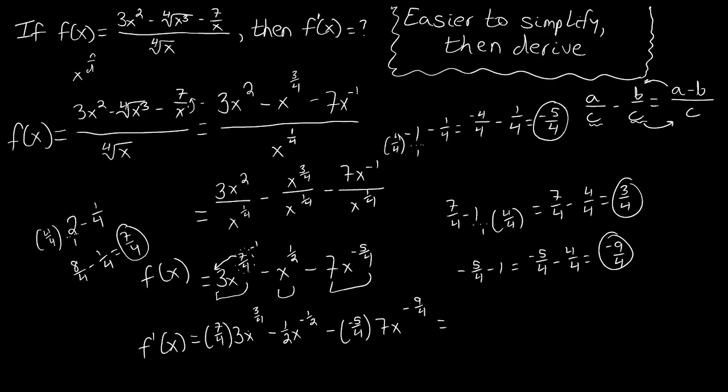Seven-fourths times three is twenty-one-fourths x to the three-fourths. The middle term stays the same. It doesn't have a multiplication we have to carry out. And then we have a minus times a negative, so we have plus thirty-five-fourths x to a negative nine-fourths. After we've done this, this is what our derivative looks like. This is our derivative function.